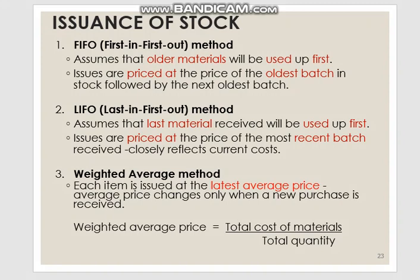The first method is FIFO — First In, First Out. We have old prices and new prices. With FIFO, the older material will be used up first. For example, with three different prices — one ringgit, two ringgit, and three ringgit — we issue the first batch at one ringgit first, then the second batch at two ringgit.